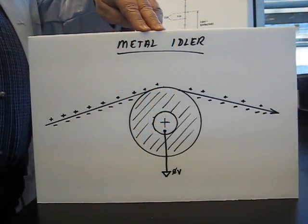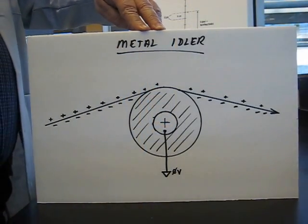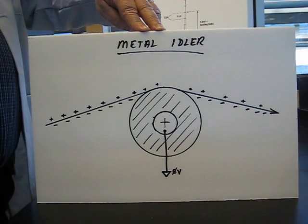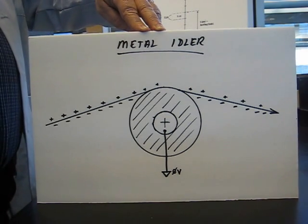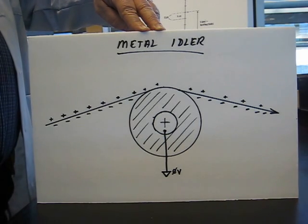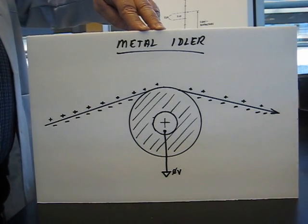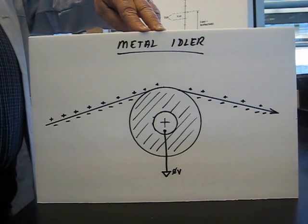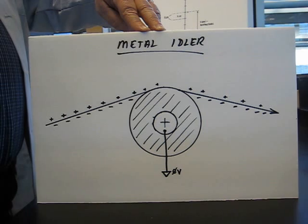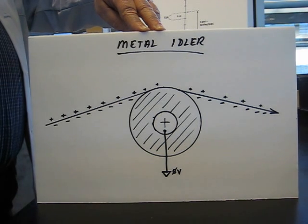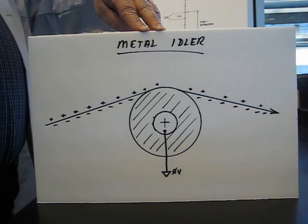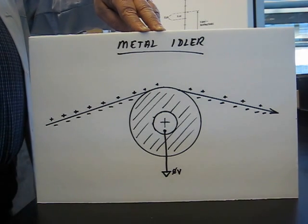Static electricity is a big problem in the converting industry, and normally we're processing insulating webs like polyethylene, polypropylene, and so on. There's a lot of static that can be generated. The static can cause injury to personnel through shocks or people being thrown back and falling on something else.